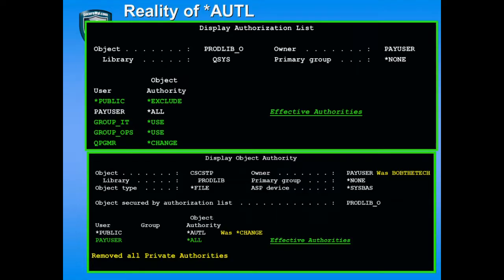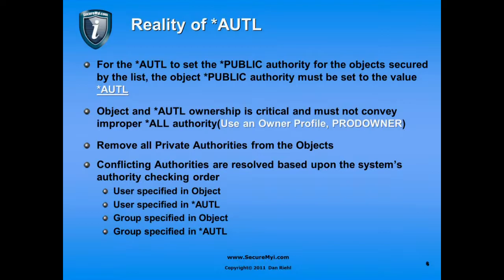We remove all of the private authorities from the objects, leaving only the owner's authority and the public authority set to AUTL, which points to the authorization list. The owner of the object will have all rights, and in this case the owner of the authorization list is also the owner of the object, so ownership does not provide any additional authority to any user. The effective authorities on the object now are: public is exclude, Group IT is use, Group Ops is use, Qprogrammer is change, and PayUser has all — with the public authority on the object set to Authorization List, deferring to the list for the actual authority. For the authorization list to set the public authority, the object's public authority must be set to asterisk AUTL — if it says all, change, or use, the object does not defer to the list.